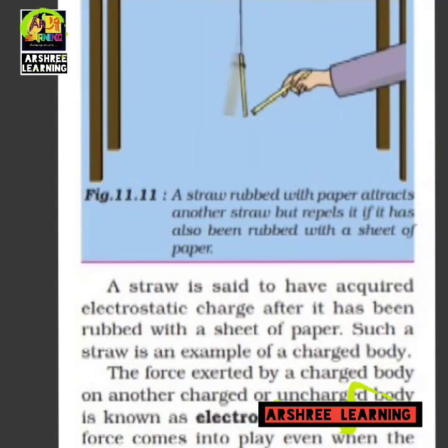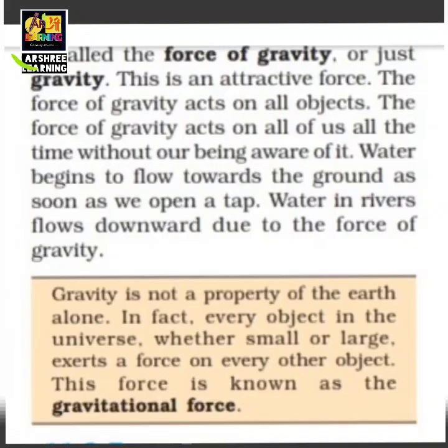When you throw a stone up, it comes back to the earth because of gravitational force. When you toss a coin up, it goes up and then falls back down — this happens because of the gravitational force of the earth, which is an attractive force. It attracts objects towards itself; it does not repel.